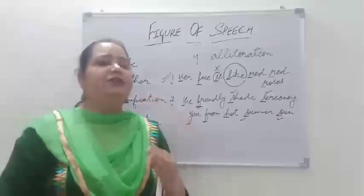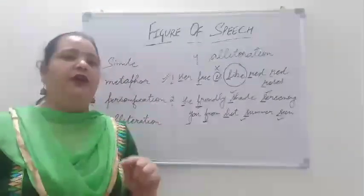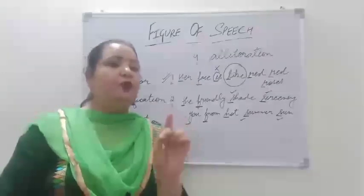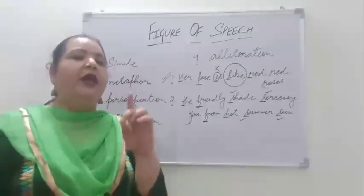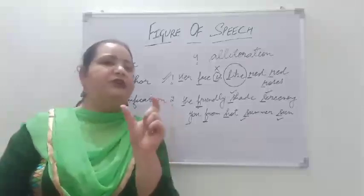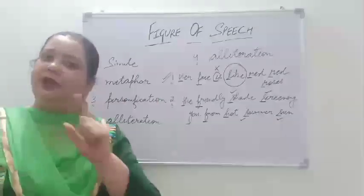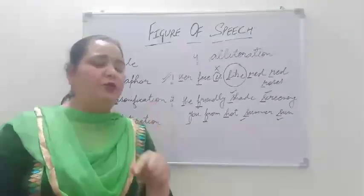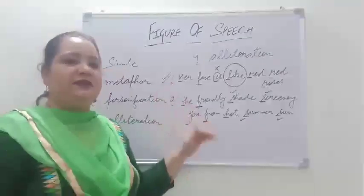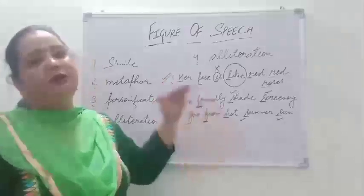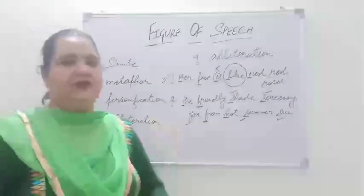And lastly, alliteration. Alliteration is the repetition — used more than once — of the same consonant sound. The consonant sound must be a consonant; it shouldn't be a vowel sound — A, E, I, O, U are not considered. Whenever a consonant sound is used more than once within the given sentence, then it is an example of alliteration.